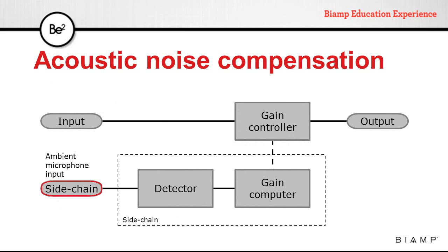In this processor the sidechain input is used for the ambient sensing microphone. The detector is just looking for the background noise to determine level. The gain computer calculates how much gain needs to be applied or subtracted from the signal to compensate for variation in background noise.